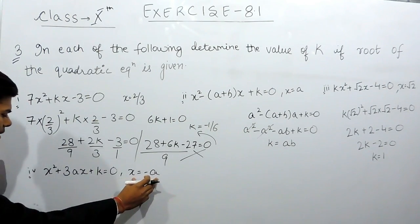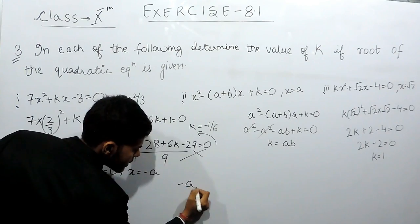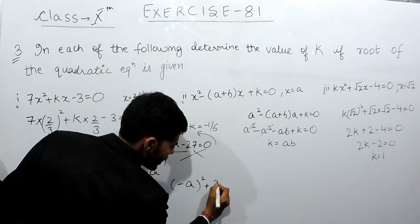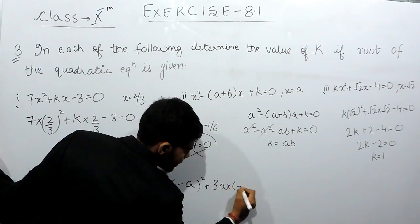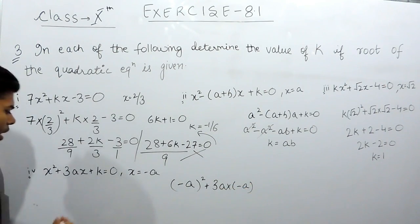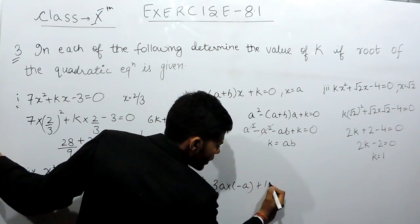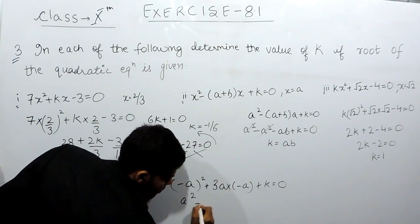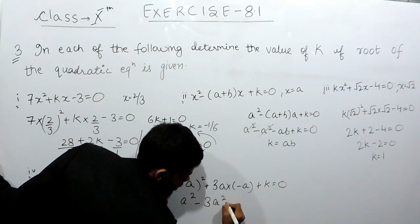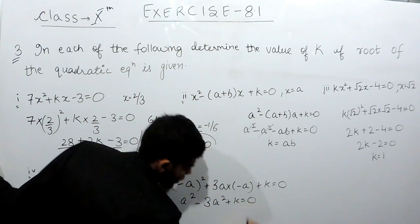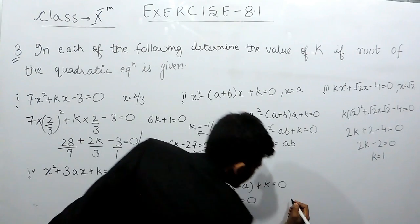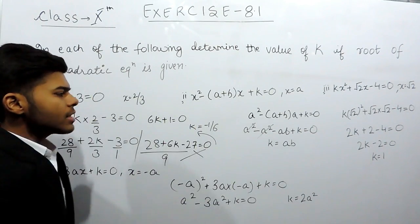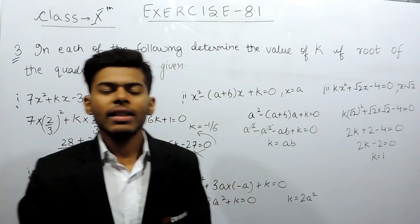And in this last part, we will keep x equals to minus a. So minus a whole square, plus 3a multiplied by minus a, plus k equals to 0. This gives a square minus 3a square plus k equals to 0, and k will come out to be 2a square. So this is how we can solve this question. Thank you.